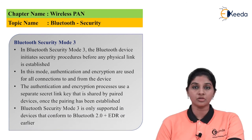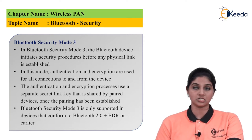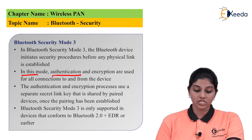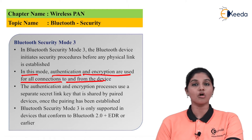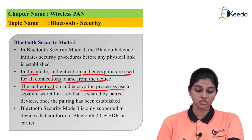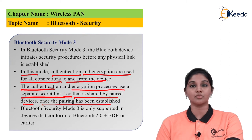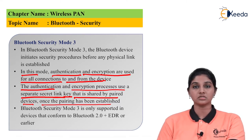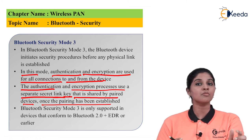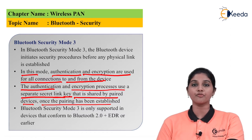In Mode 3, the device initiates the security process before the physical connection is established. Authentication and encryption are used for all connections to and from the device — from master to slave and slave to master. The authentication and encryption process uses a separate secret link key shared by paired devices. Once pairing has been established, the secret link key is shared, enabling encryption and authentication. Therefore, the security provided by Mode 3 is much higher than Mode 1 and Mode 2.